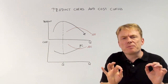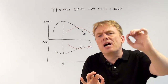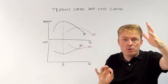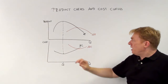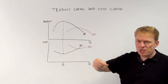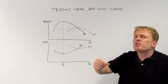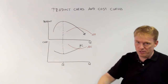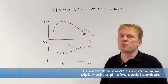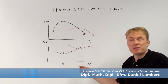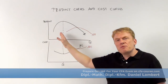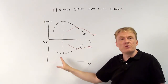If total product becomes steeper, the output rises by far more than the quantity does. And if this happens, the additional cost incurred by one additional unit of quantity will go down. So marginal product goes up if and only if marginal costs go down. Keep this in mind.